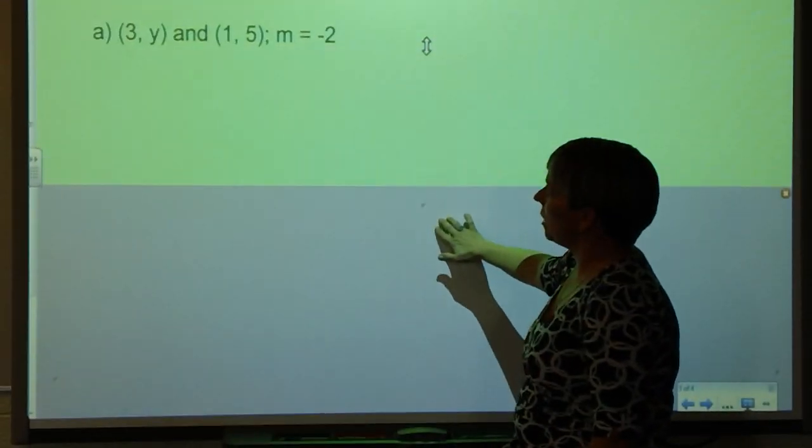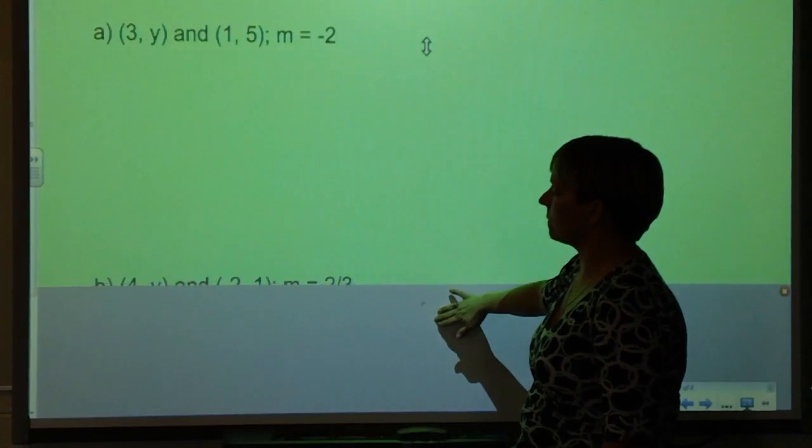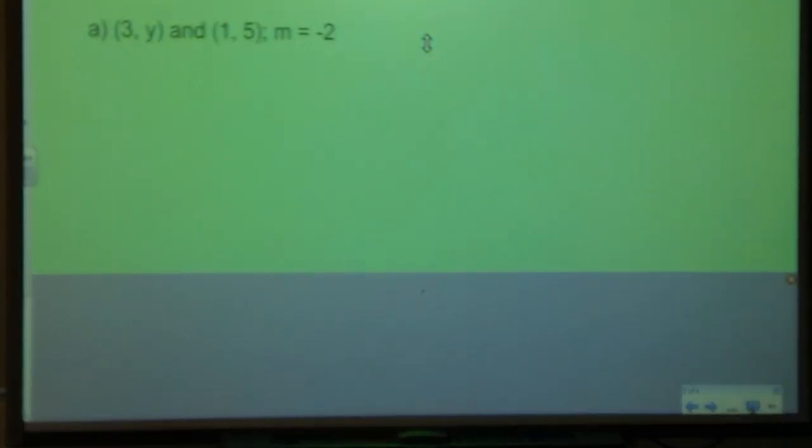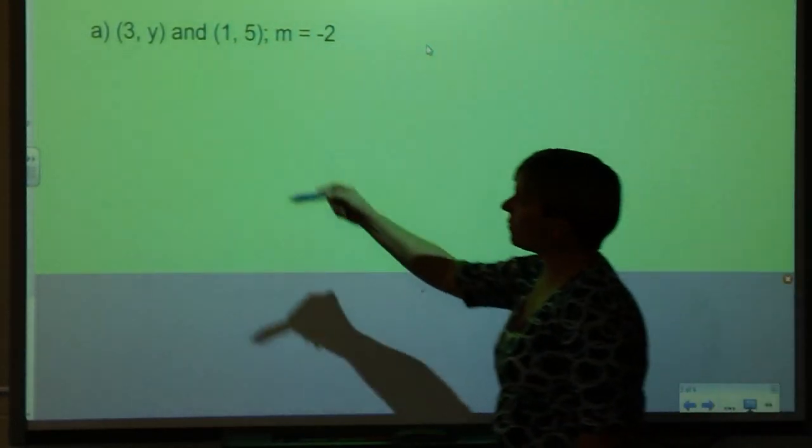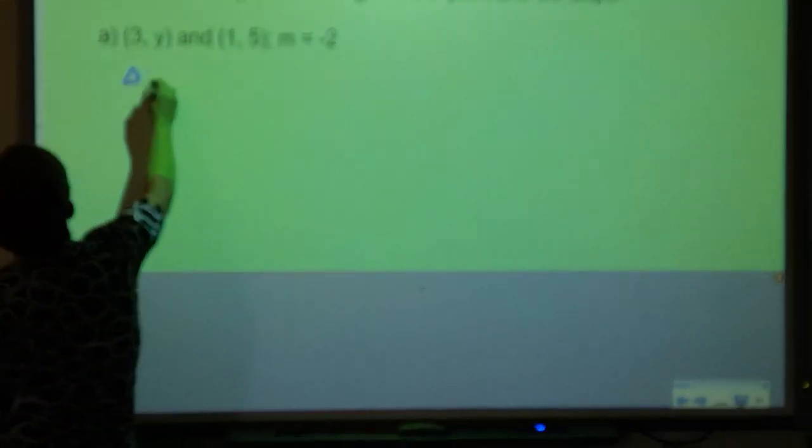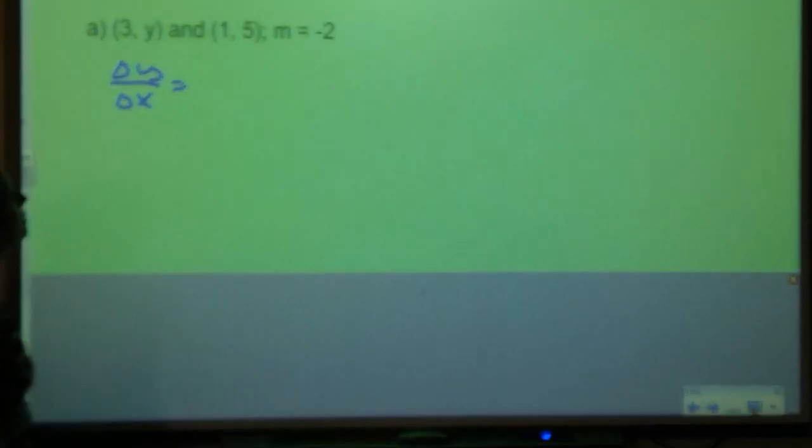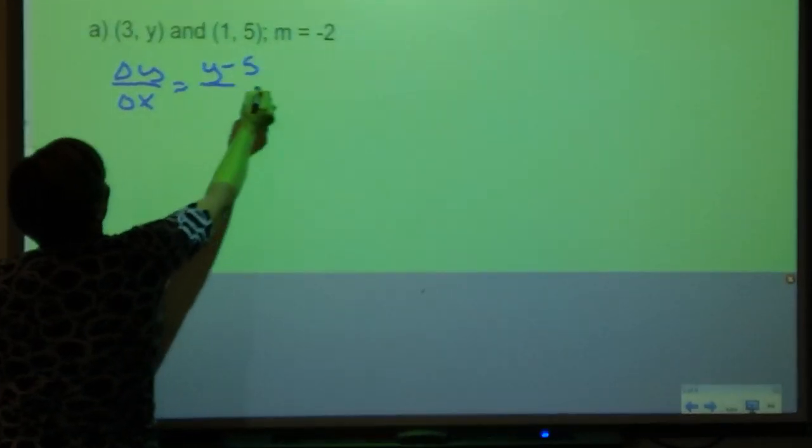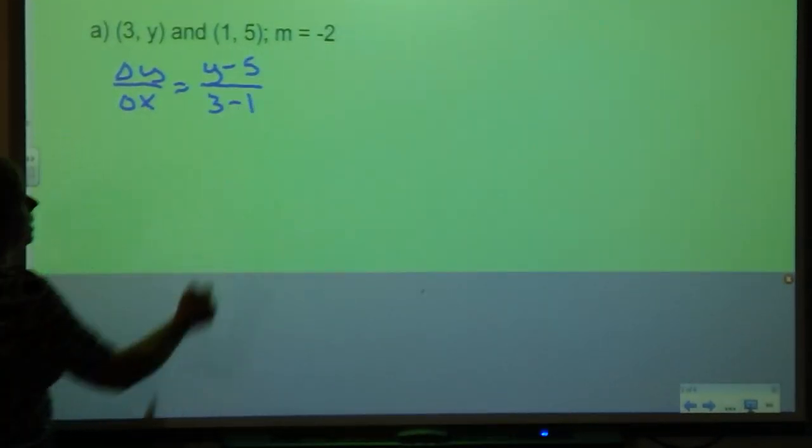One of the things that you'll be asked to do is find a missing coordinate given one point and the slope. Here's how you would do that. For this one, I have points (3, y) - I don't know what that coordinate is - and (1, 5). But I do know my slope is -2. I'm going to set it up the same way that I did previously. I'm going to find my change in y over my change in x, which means I'm going to do y minus 5 in my numerator and 3 minus 1 in my denominator.